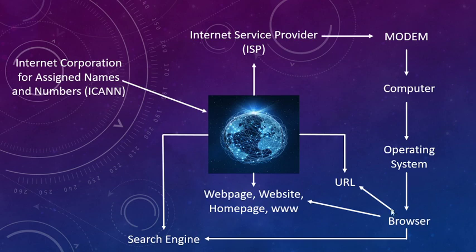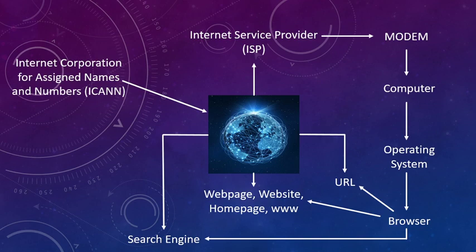What is a browser? A browser is a software or program through which you can access different websites. This browser could be Google Chrome from Google Corporation, or other browsers such as Mozilla Firefox, Safari, Opera. On your mobile you might have seen UC Browser or CM Browser. A browser is a program through which you can access websites.